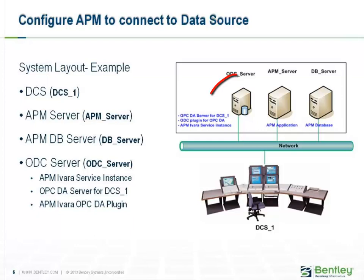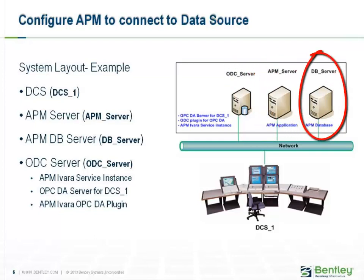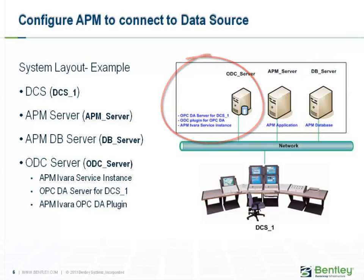Let's assume we need to connect a Distributed Control System (DCS) called DCS-1 to an APM system with the following layout: one machine called APM_server dedicated to hold and manage the APM database, and one machine called ODC_server dedicated to handle Online Data Collection (ODC), with the following applications running on it: an OPC DA server compatible with the DCS, an OPC DA plugin, and an APM service instance. Note that this is one possible layout — other layouts are also possible, and you should refer to your actual system layout when configuring your own APM system.